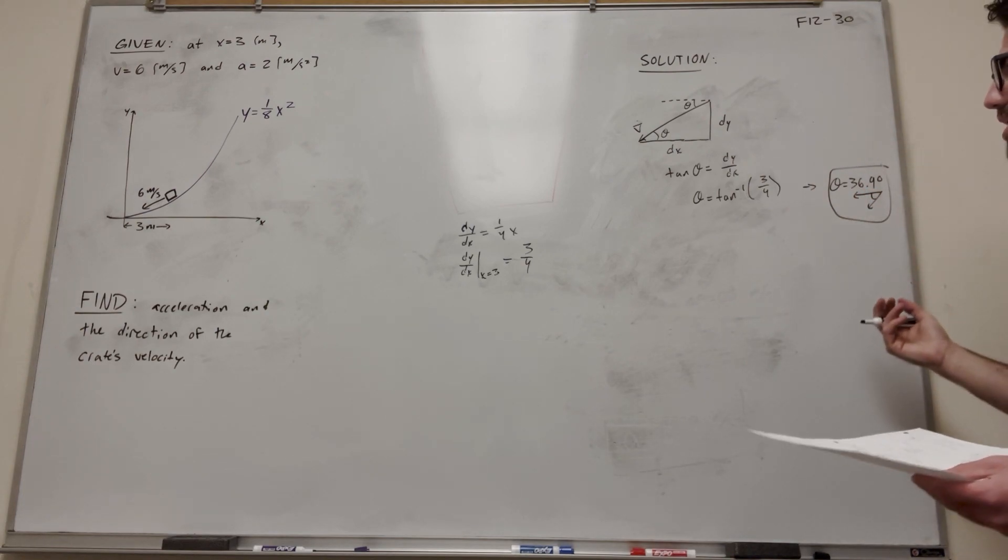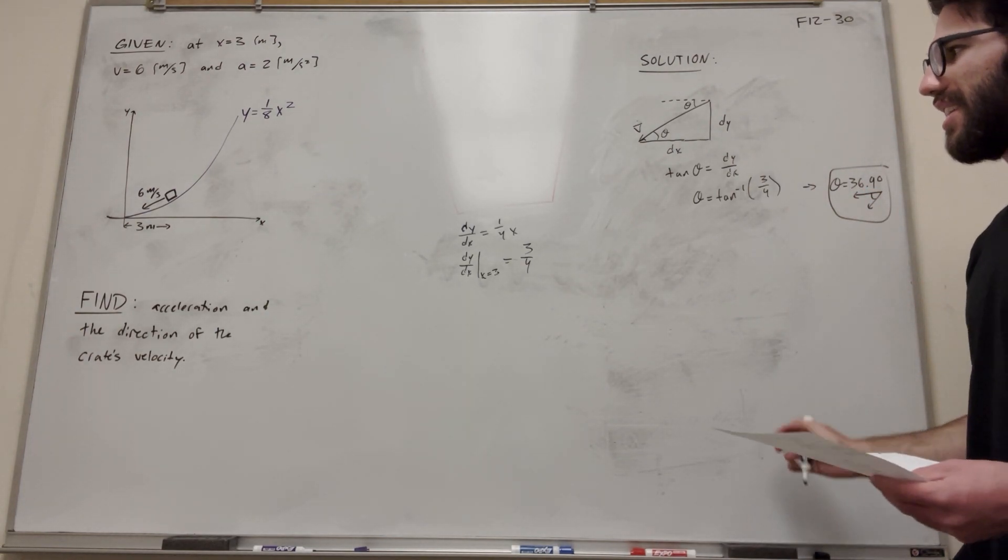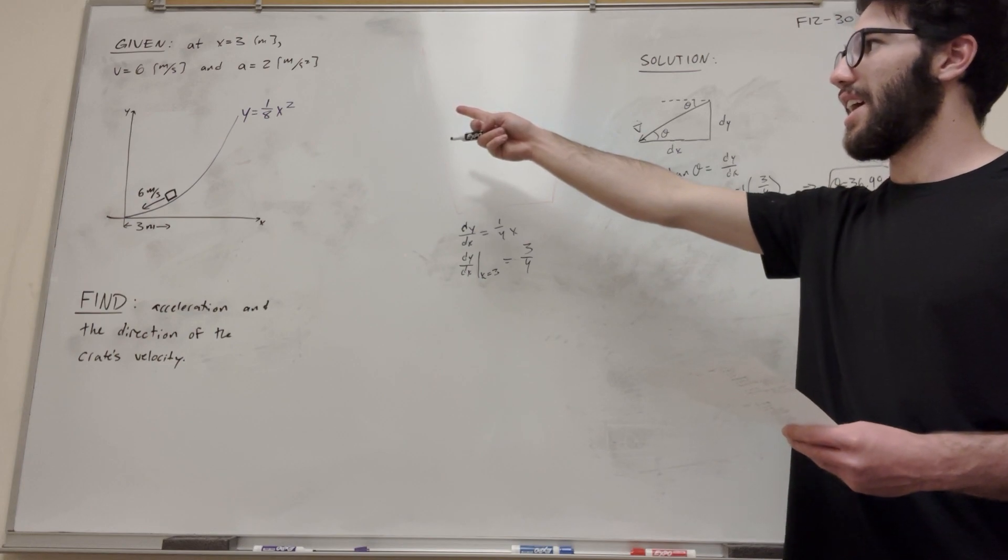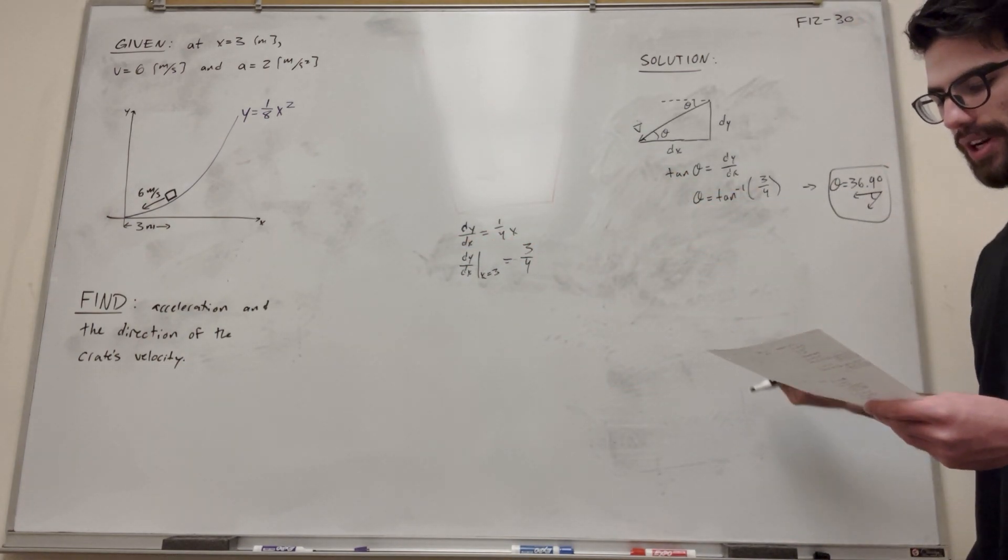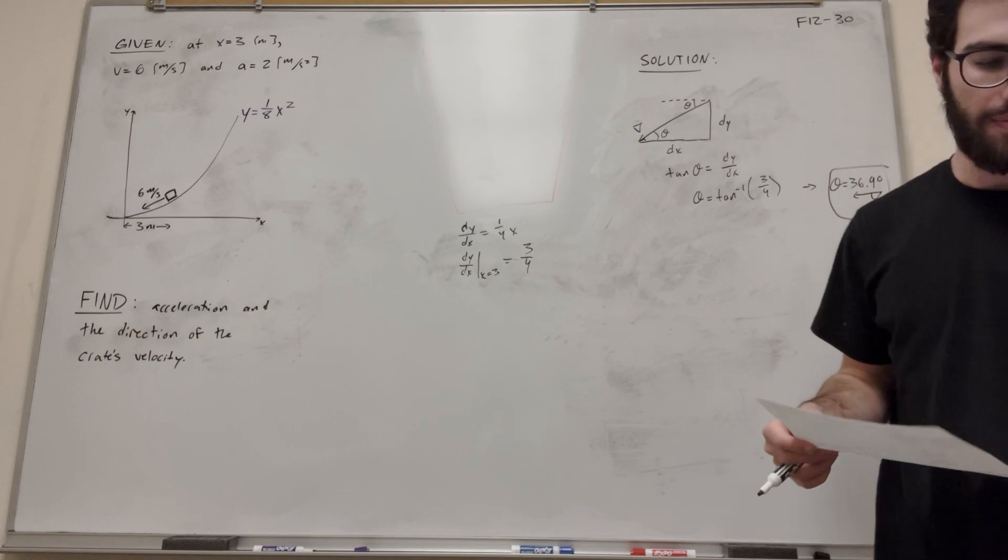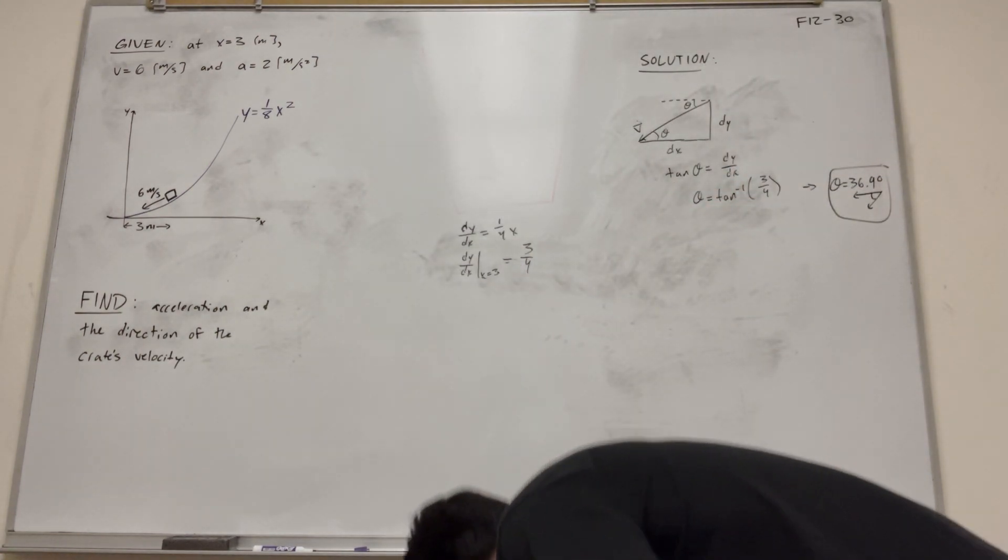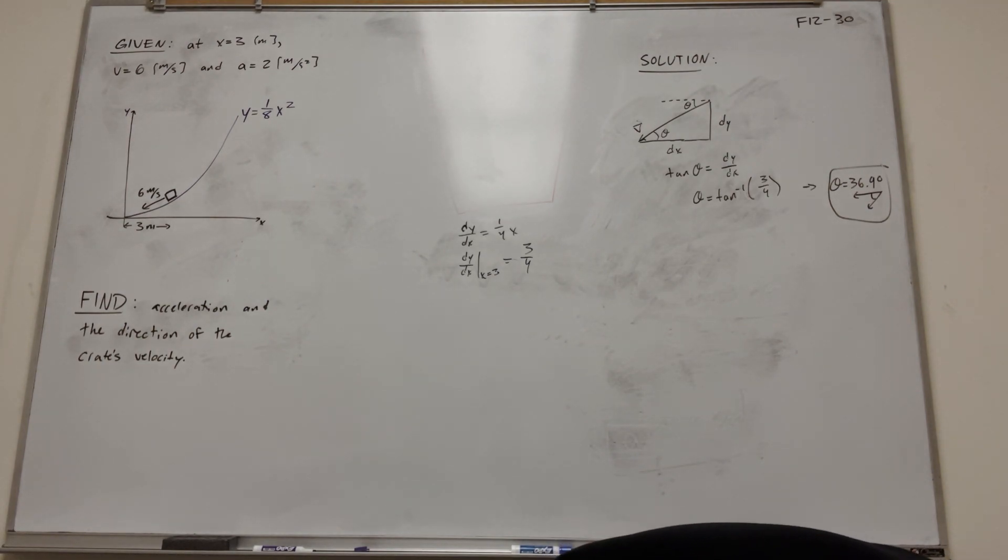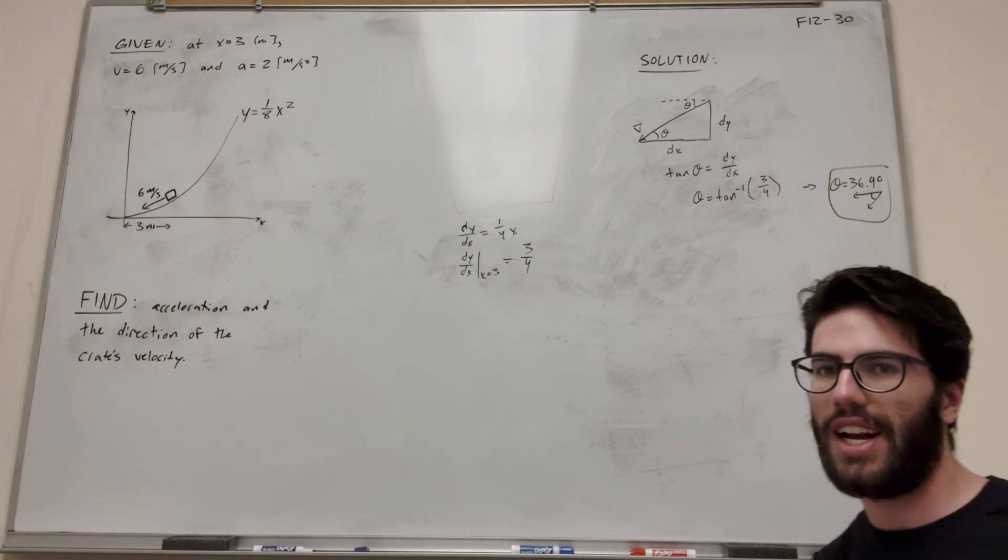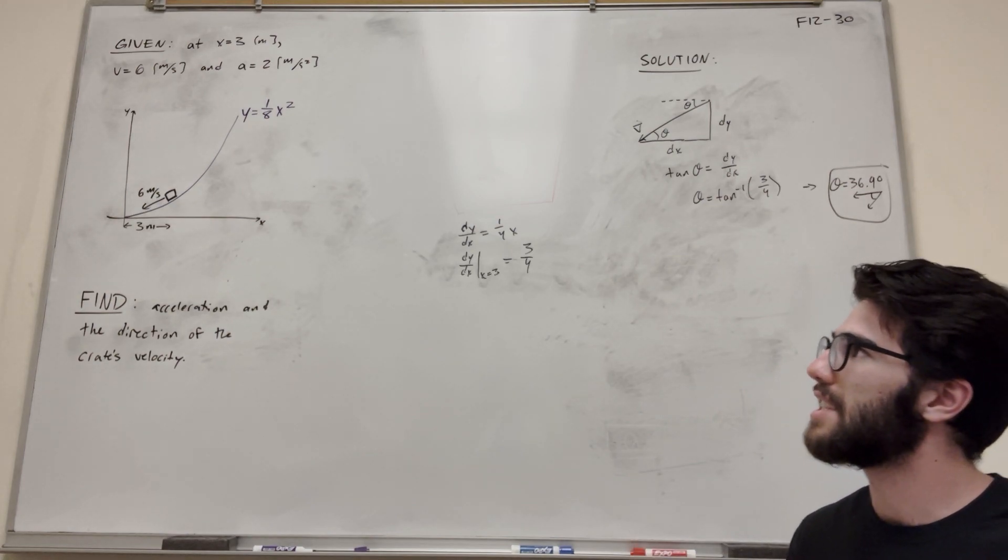All right, so there's part A. Let's go ahead and do part B, the harder part. We're finding the acceleration. So we're going to use tangent and normal acceleration for this. We're going to use that coordinate system, because that's going to make it a lot easier for us. Because when we're moving at an angle, it's kind of hard to find acceleration.